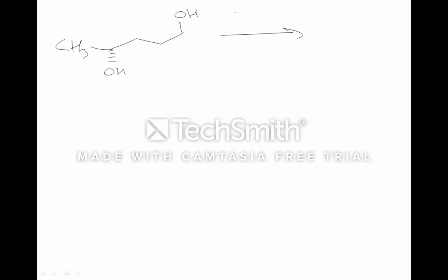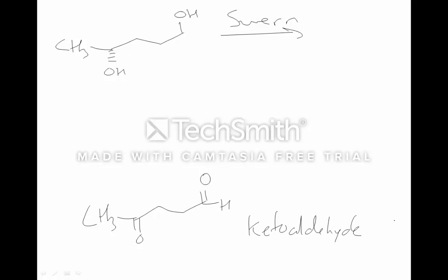Let's do one more with a diol — this could be single enantiomer or racemic. I actually did reactions like this in my PhD. Using a Swern reaction with more equivalents of reagents, you get a double oxidation and a keto aldehyde product. These are really cool and useful reactions. For Swern and chromium oxidations we won't ask the mechanisms on the exam, but you must be able to predict the products.